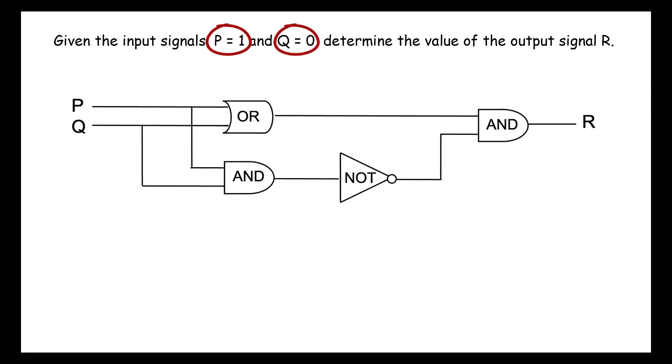We begin by labeling the wires that exit from p and q with their respective values 1 and 0. Next, we trace each wire until we reach a gate. So beginning with p, we trace the wire to the OR gate and note that p inputs 1 into this gate.